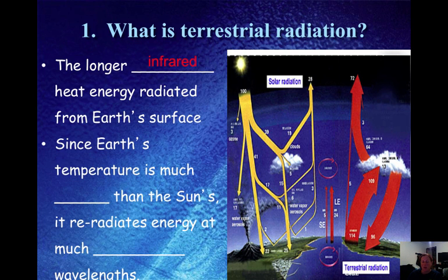Those are the longer infrared heat energy wavelengths radiated from Earth's surface. Since Earth's temperature is much cooler than the sun's, it re-radiates energy at much longer wavelengths. Longer wavelengths have less energy and shorter wavelengths have more energy. Higher temperatures emit shorter wavelengths, and that would come from the sun.